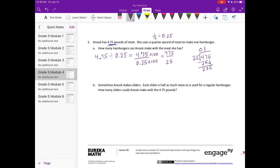Bring down the five. 25 can go into 225 nine times. Nine times 25 is 225, so she can make 19 hamburgers.